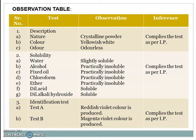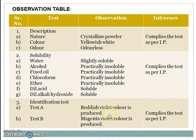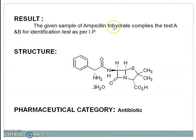Now, after performing the practical, we deal with the observation table. Description: nature is crystalline powder, color is yellowish white, odor is odorless — complies as per IP. Solubility: in water slightly soluble, in alcohol practically insoluble, in fixed oil practically insoluble, in chloroform practically insoluble, in ether practically insoluble, and in dilute acid and dilute alkali hydroxide it is soluble — complies as per IP. Identification test: Test A — reddish violet color produced; Test B — magenta violet color produced. Both comply the test as per IP. Result: the given sample of ampicillin trihydrate complies Test A and B for identification test as per IP.